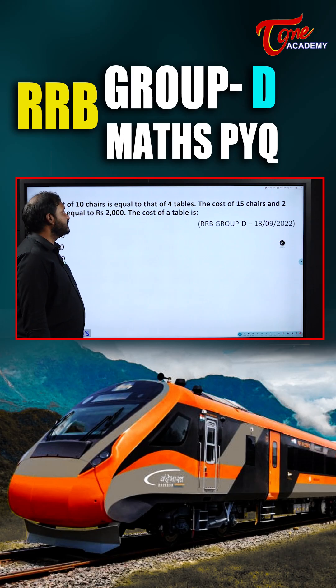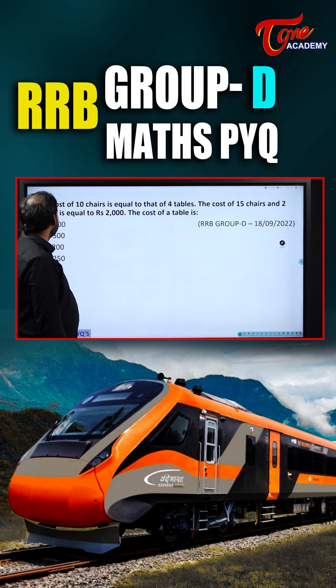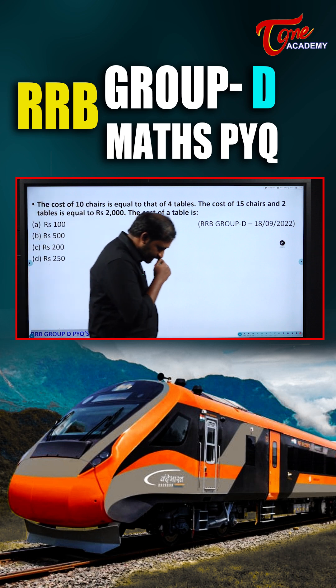The cost of 10 chairs is equal to that of 4 tables. The cost of 15 chairs and 2 tables is equal to 2000. Find the cost of a table.